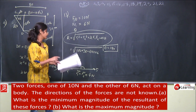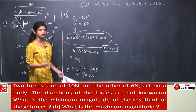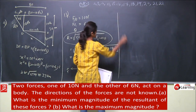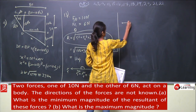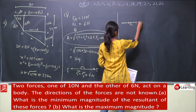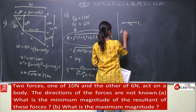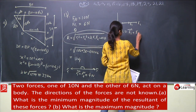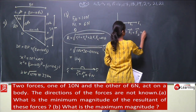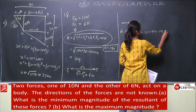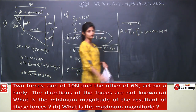For part B, the maximum magnitude occurs when both forces act in the same direction. In that case the resultant is F1 + F2 = 10 + 6 = 16 Newton. The maximum value will be 16 Newton when θ = 0°.